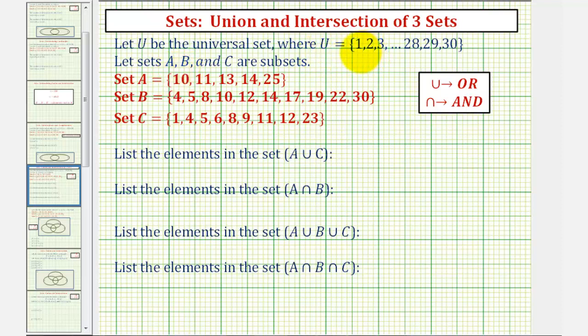We're given the universal set contains the whole numbers one through 30, where sets A, B, and C are subsets of U containing the elements given here. We want to list the elements in each of these sets given below.